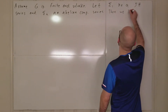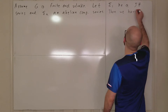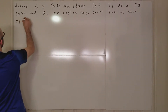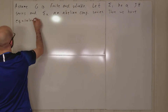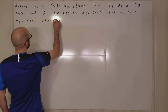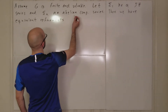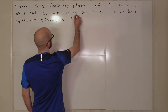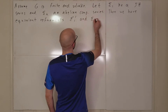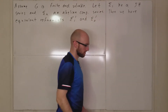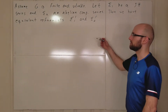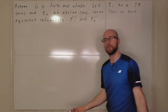Then we have equivalent refinements, and we'll call these sigma 1 prime and sigma 2 prime. We know that we have equivalent refinements because of the Schreier refinement theorem.